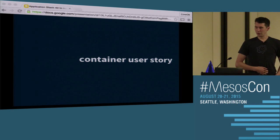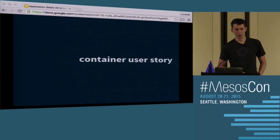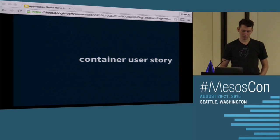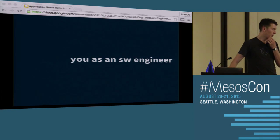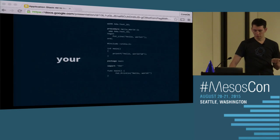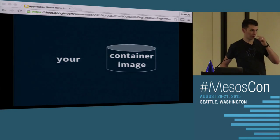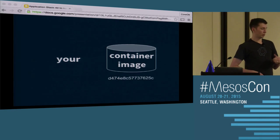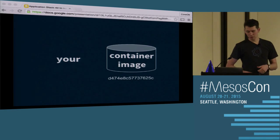I wanted to start with a user story of containers and how we think about it from the developer side. A lot of us have to juggle both the deployment side — how do I get bits there, how do I keep them updated, how do they run. In a lot of cases a container is interesting because it's some software engineer taking their code and packaging it up into an image. Ideally, we're able to take a hash of it and ship it around, and know that when we ship it to another host, the hash is the same.